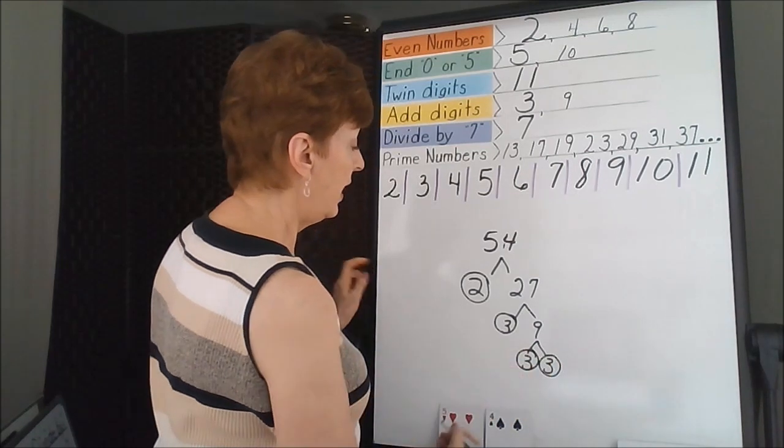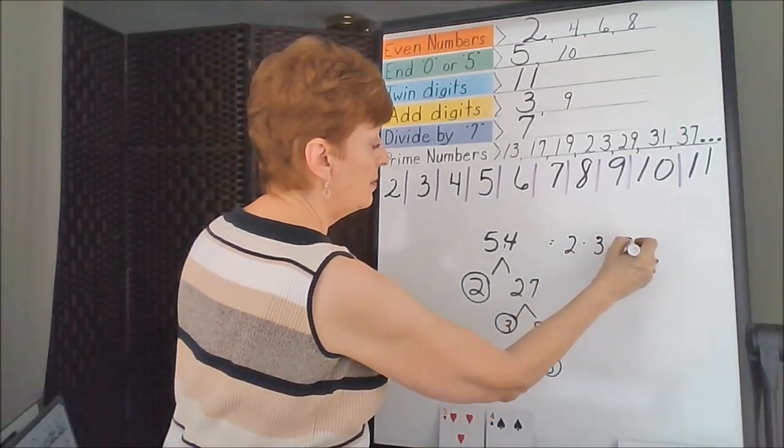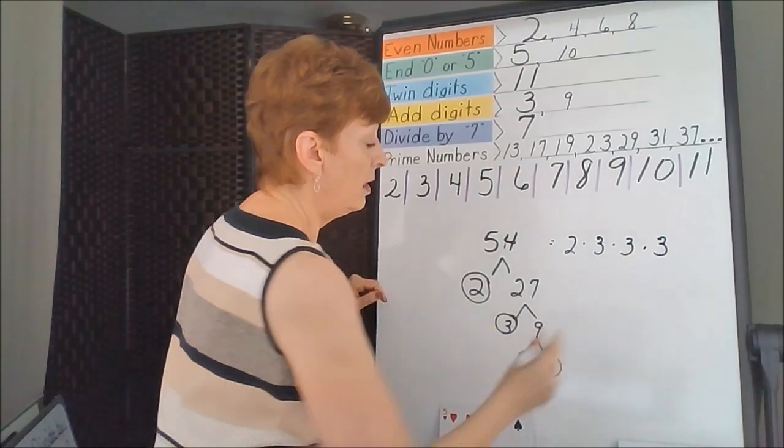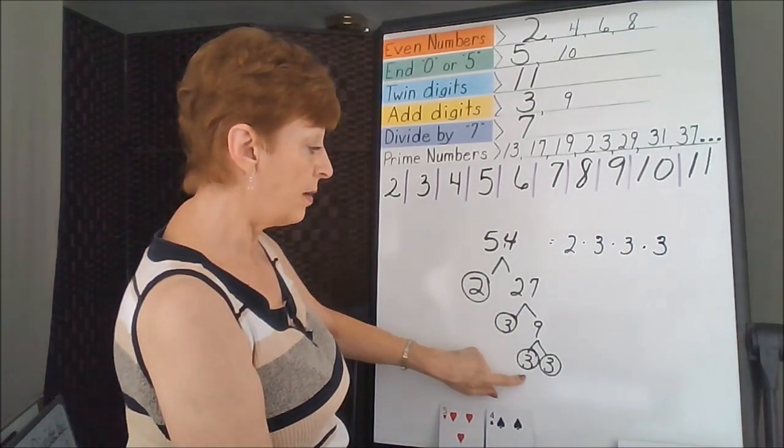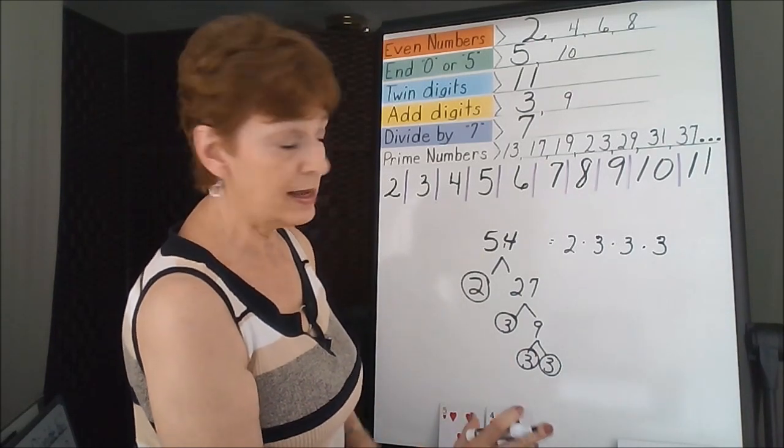So 54 has the factors of 2 times 3 times 3 times 3. If you keep track of your prime numbers as you're working, they lift off the page and you won't have to rethink it.